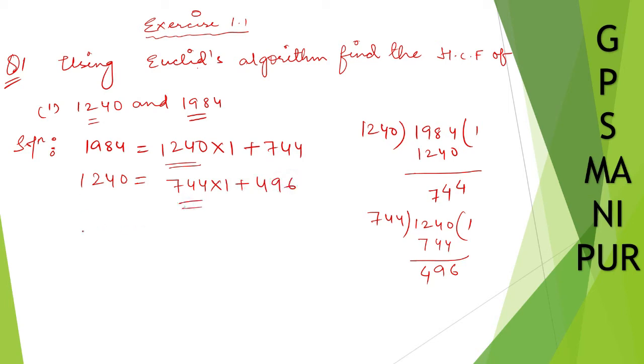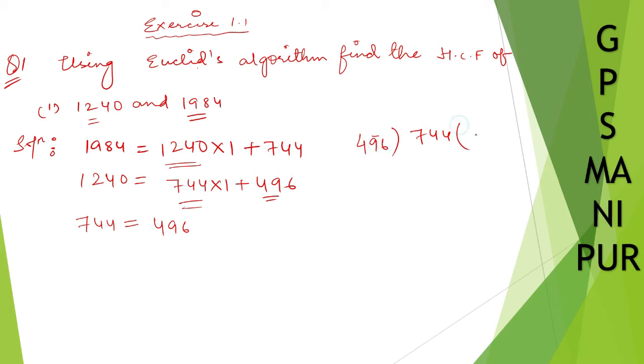Now write down this number 744 here. Take this number 496 and divide by 496. Now let us divide 496, and if you subtract, you get 248. Now you got 496 into 1 plus 248.